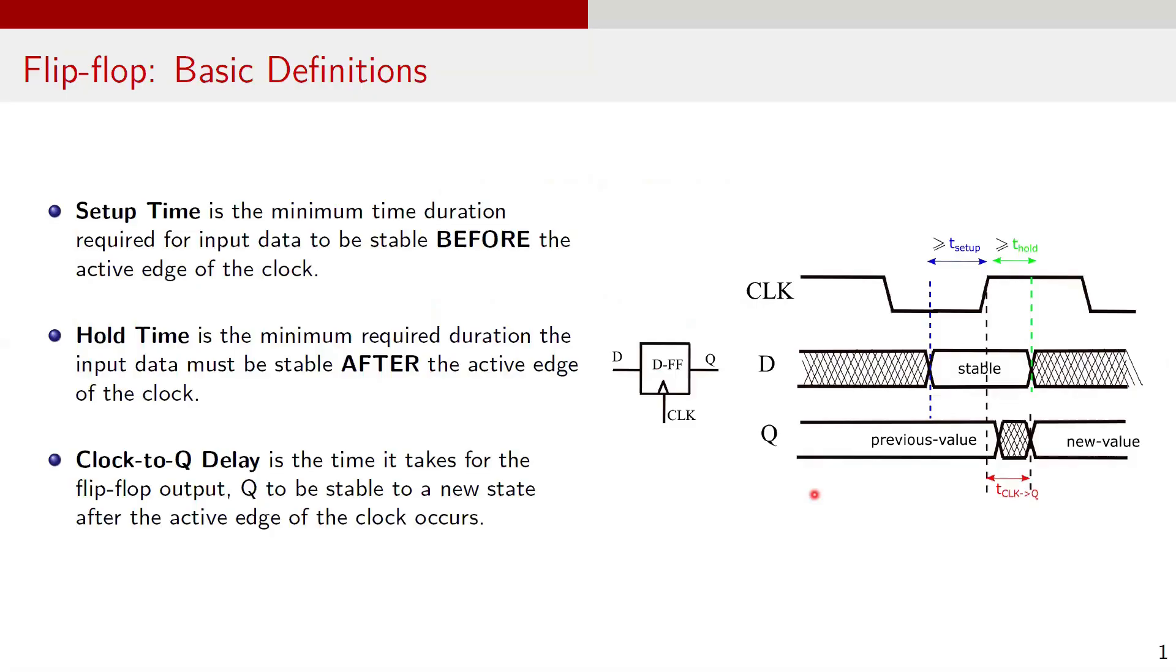First, let's revisit some basic definitions related to flip-flop timing, such as setup time, hold time, and clock-to-Q delay. Setup time is the minimum time duration that the input data at the flip-flop must be stable before the active edge of the clock occurs. Hold time is the minimum duration required for the input data to be stable after the active edge of the clock. And clock-to-Q delay is the time it takes for the flip-flop output Q to be stable at a new value after the active edge of the clock. Violating setup and hold time means that incorrect data may get stored in the flip-flop.